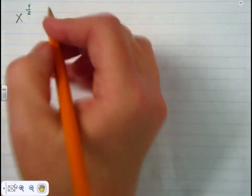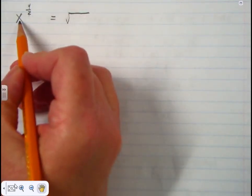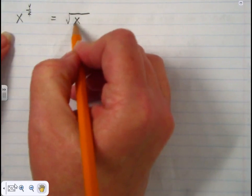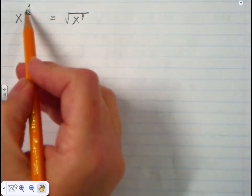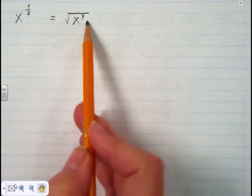With that same information about what the numerator and denominator in a rational exponential expression mean, we can take something like x to the y over two power and transform that into its radical expression. The two in the denominator gives us the square root, and the radicand is x to the y power. So x to the y over two equals the square root of x to the y power.